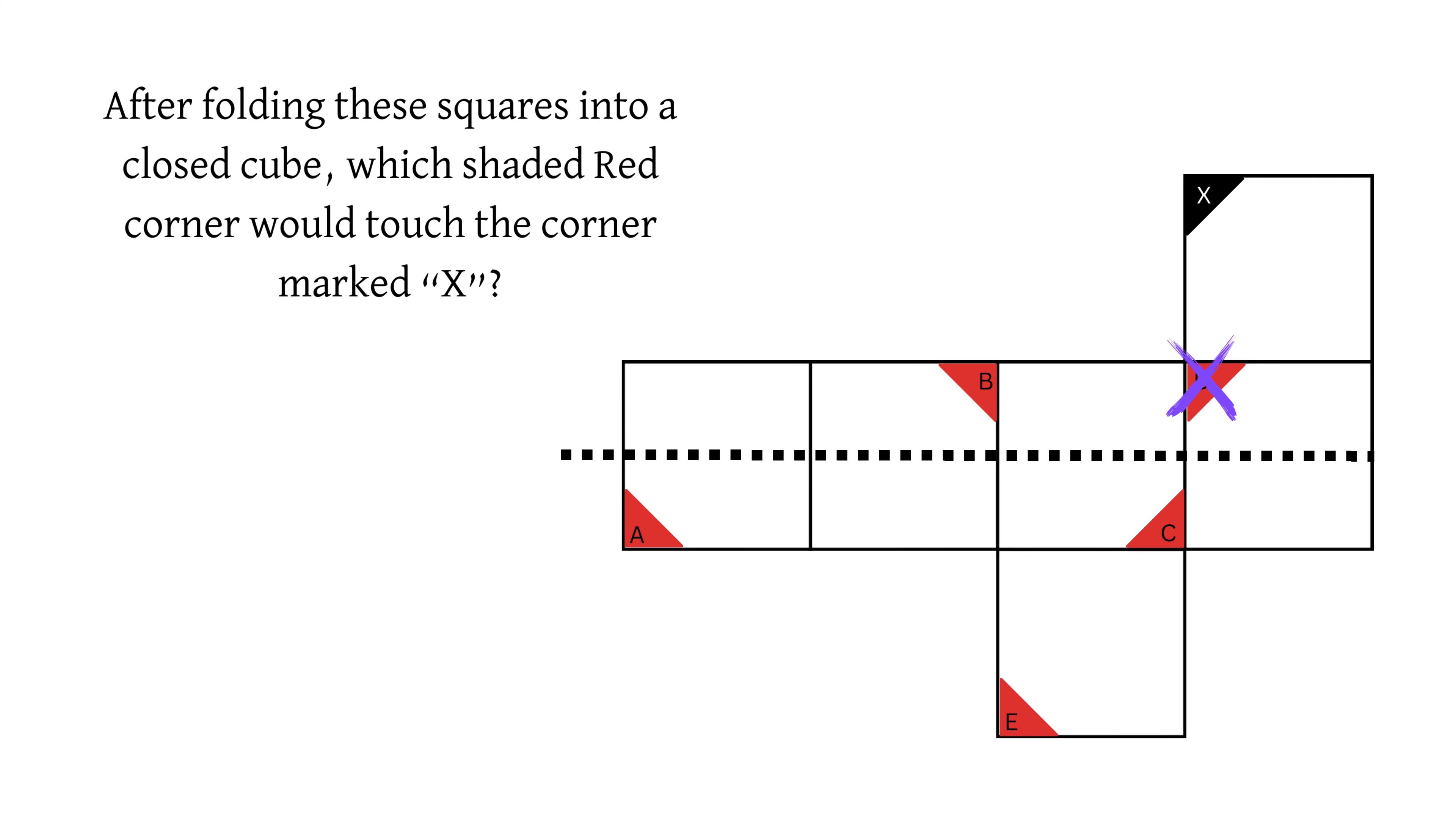As corners A, C and E are in the bottom half and the X corner is in the top half, we can eliminate them as well, leaving only option B as our final answer.